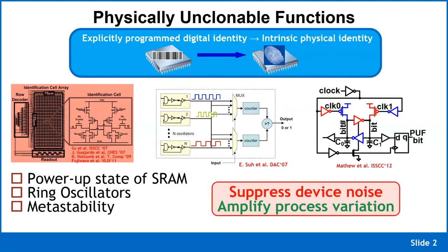Static entropy is the kind of entropy where we have a random ID that is unique to every die in the field. It's random in the sense that every die has a different ID, totally random with respect to any other die, and every time that part powers up, we want to get that same random number for the lifetime of the die.